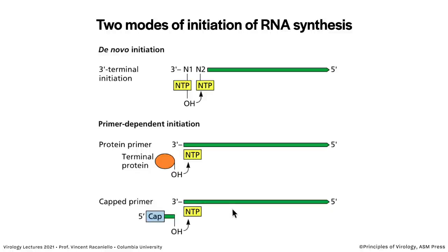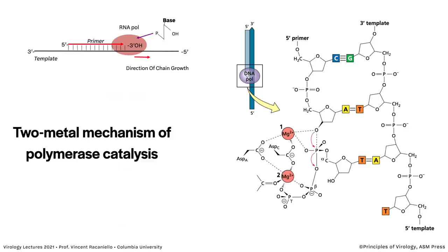There are two ways to initiate RNA synthesis. You can initiate de novo — without a primer — where the polymerase simply adds an NTP onto the 3' end and keeps adding. In many cases polymerases are primer-dependent. One example is a protein-linked primer, where the polymerase uses that and adds the first base onto it. Or there can be a nucleic acid primer — in the case of influenza virus the RNA primer has a cap on it that is used to start synthesis.